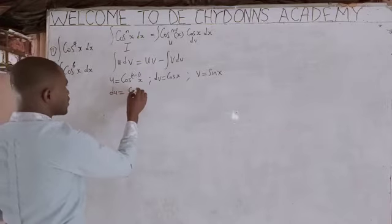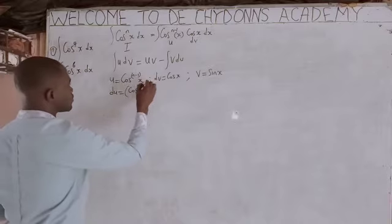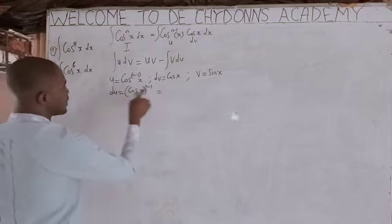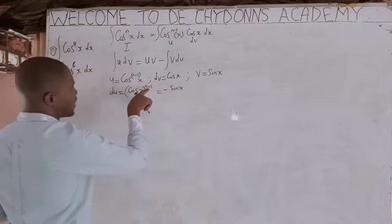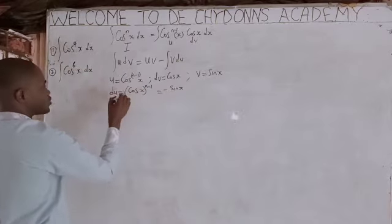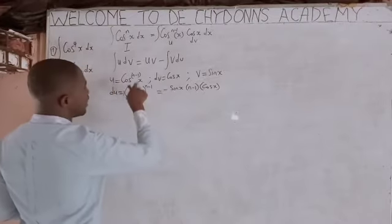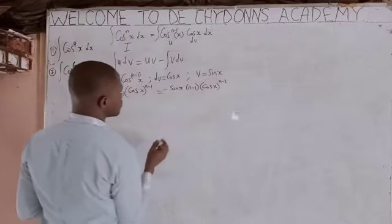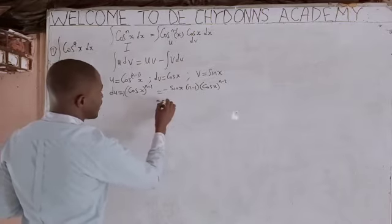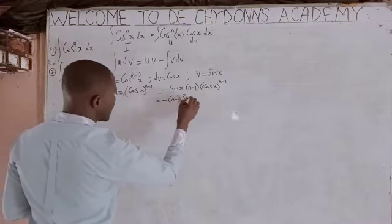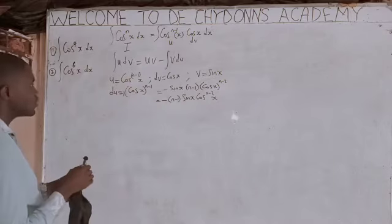Now, what is du? u is cos(x) raised to the power of n minus 1. How do we differentiate it? The derivative of cos(x) is minus sin(x). Then we bring down n minus 1, multiply by it. You have n minus 1 times bracket cos(x) raised to the power of n minus 1 minus 1, which is n minus 2. So du equals minus (n-1) sin(x) cos^(n-2)(x) dx.